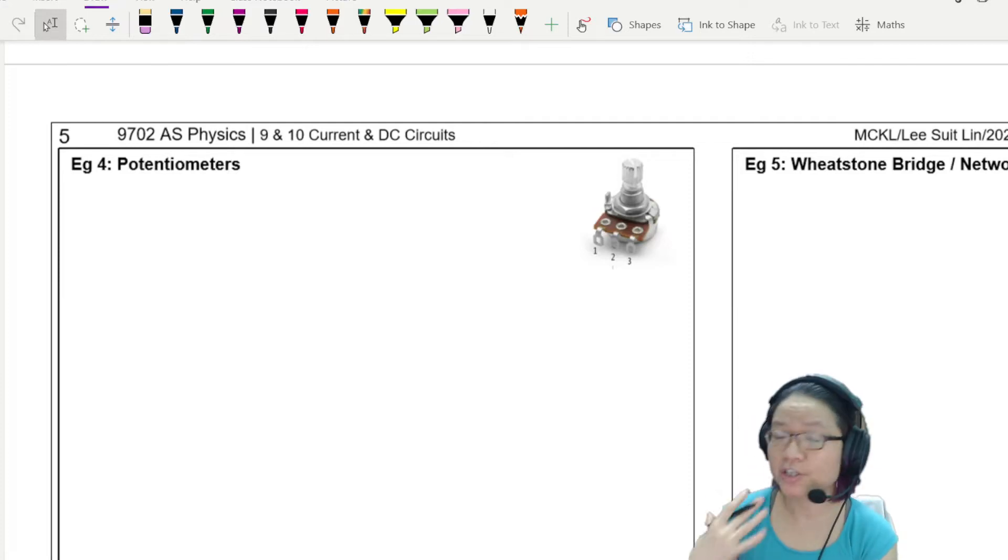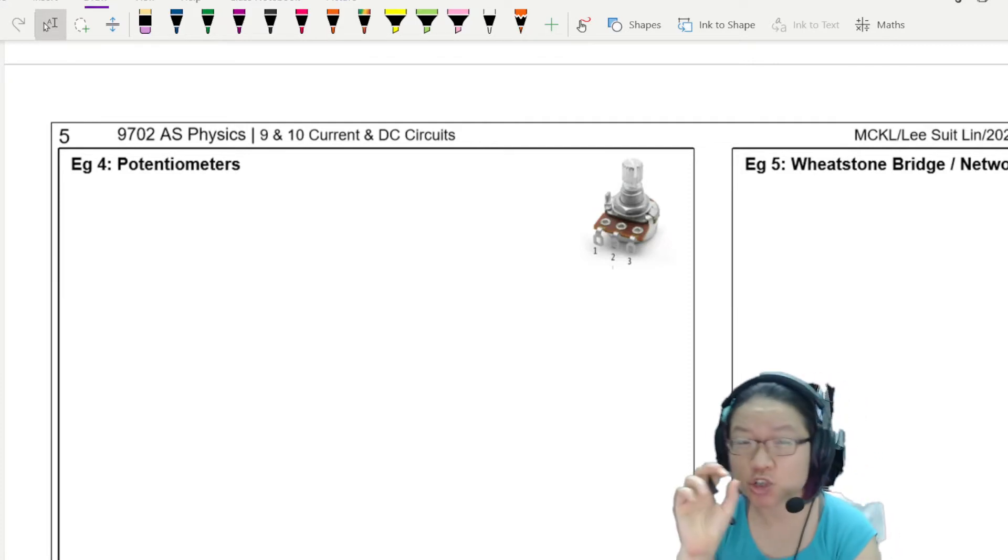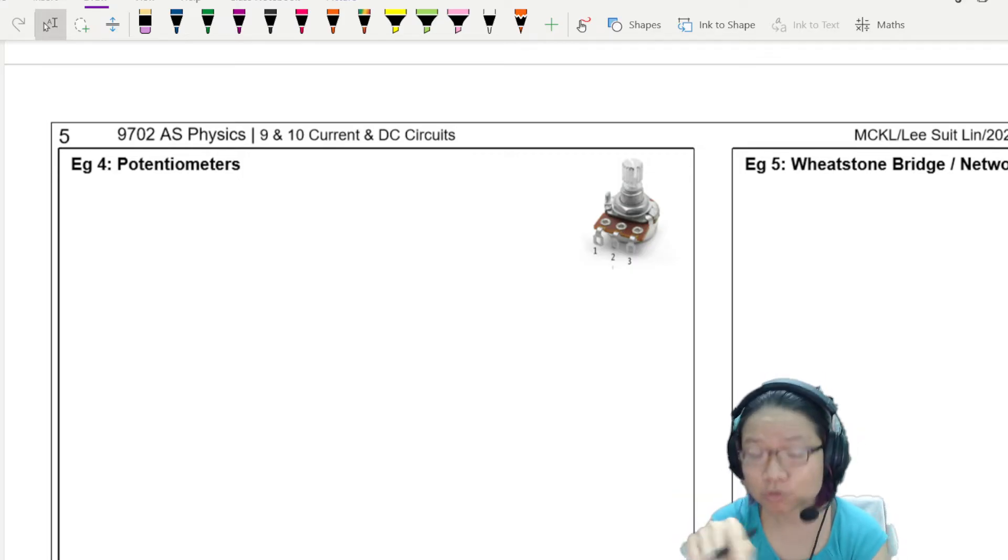So you've learned about potential dividers, where we change the value of R to change the potential difference in the circuit.